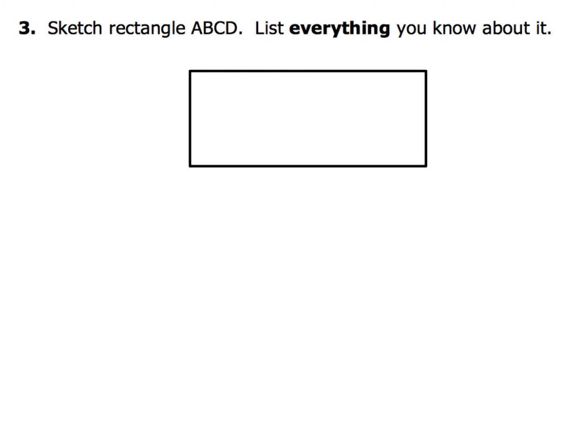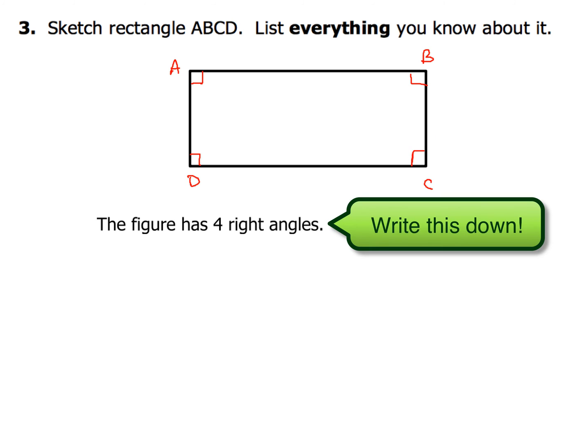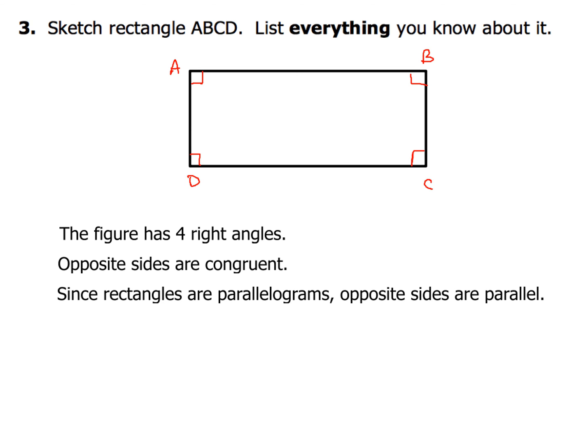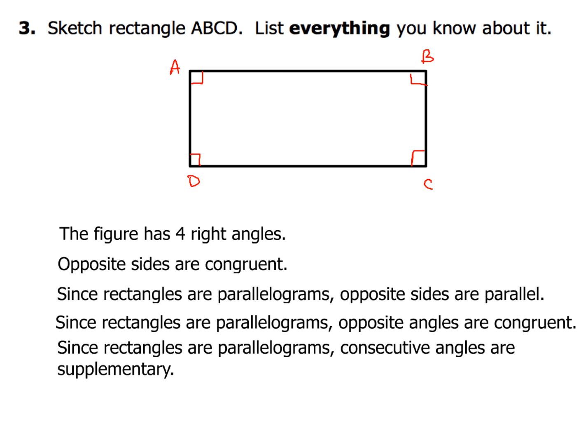For the last part, we sketch rectangle ABCD and list everything we know. First, a rectangle has four right angles. Opposite sides are congruent. Since a rectangle is a type of parallelogram, all parallelogram properties apply: opposite sides are also parallel, opposite angles are congruent, and consecutive angles are supplementary.